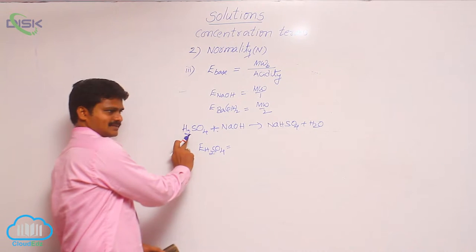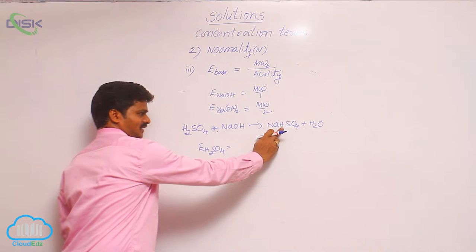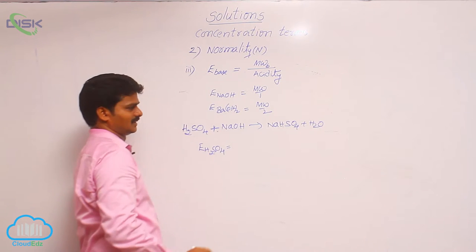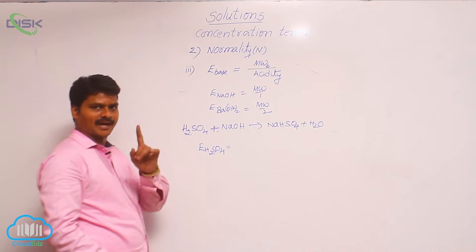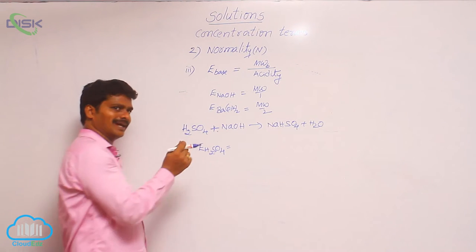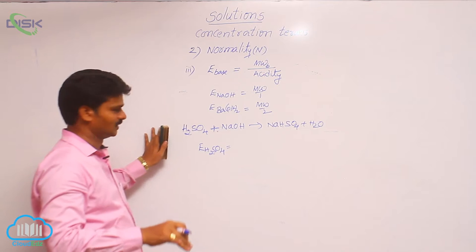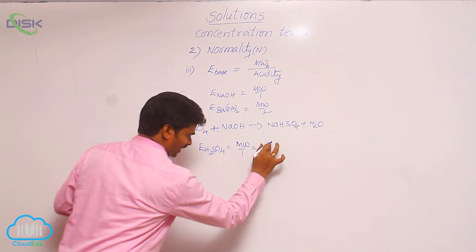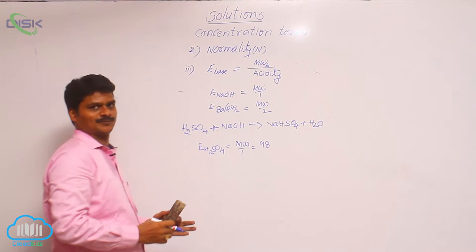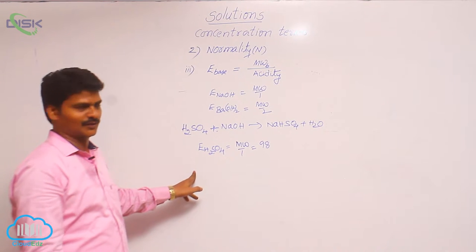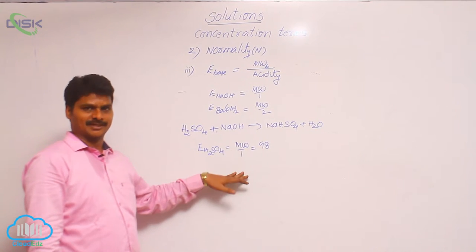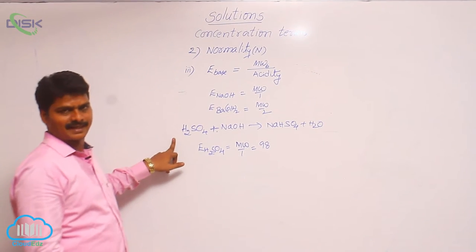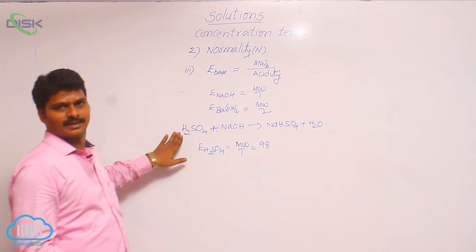In this reaction, H2SO4 has 2 hydrogens and only 1 hydrogen is replaced, forming NaHSO4. That means in this entire reaction only 1 hydrogen is replaced, so n-factor is 1, and equivalent weight of H2SO4 here is molecular weight divided by 1, which equals 98. Even though the maximum basicity of H2SO4 is 2, here we use 1 because H2SO4 uses only 1 hydrogen in this reaction.